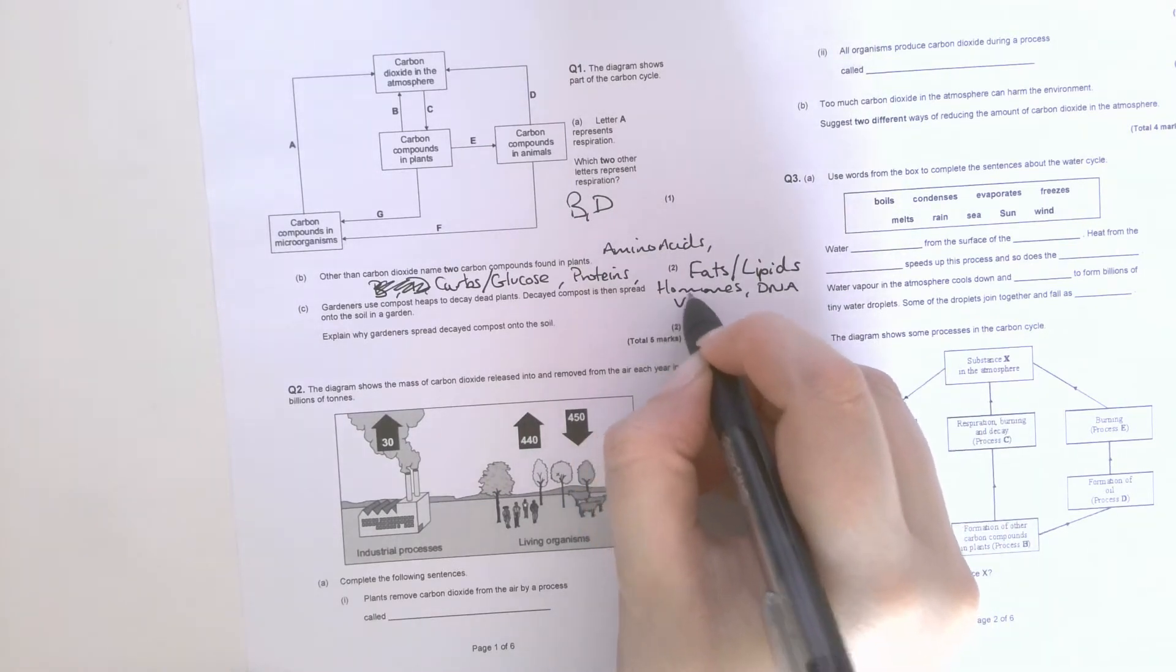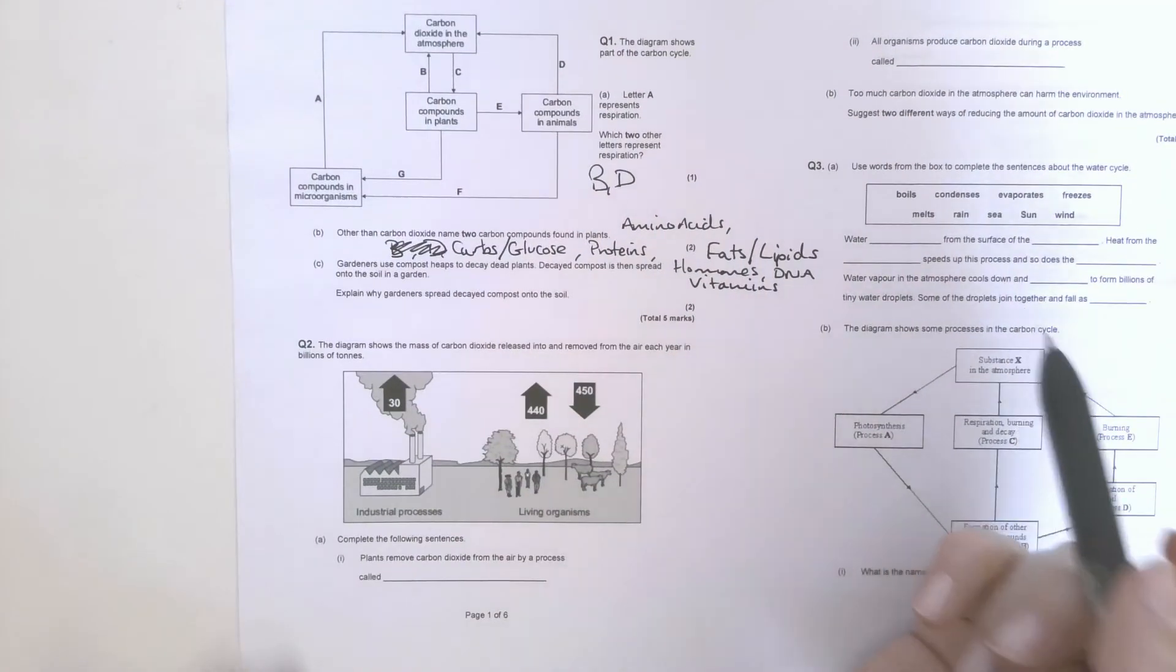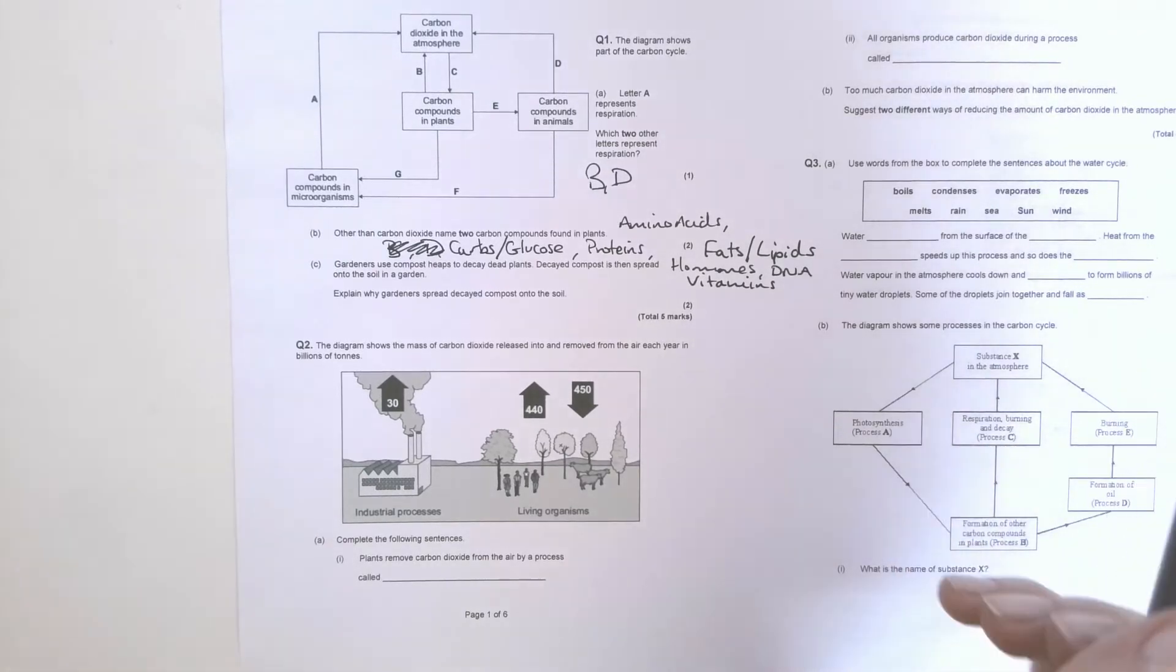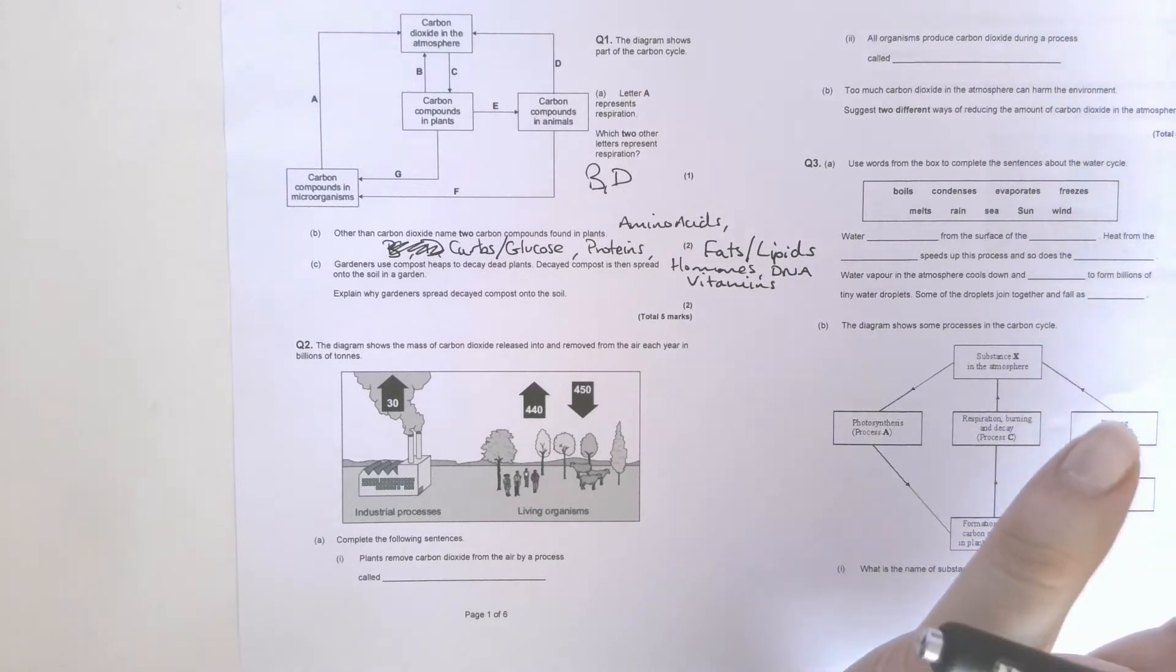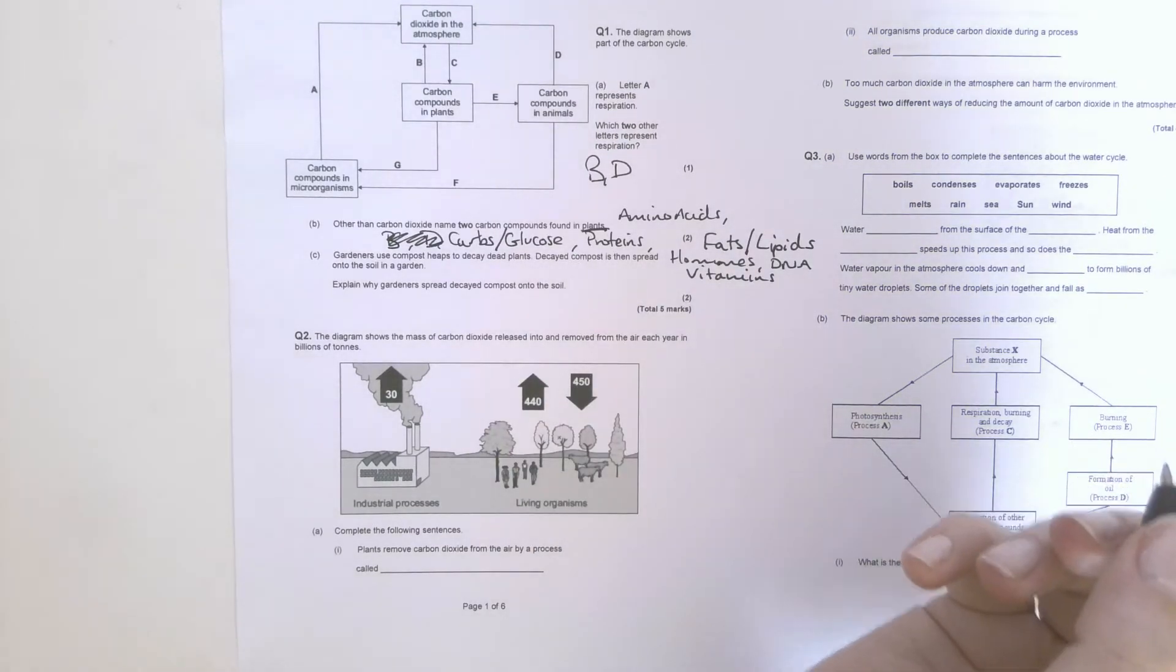You've got fats, lipids, well fats are lipids, put a slash in there, hormones, DNA, vitamins have some carbon in them. So basically any molecule that you build a living thing out of. Quite a few of you have put methane there, and good shout because from chemistry that's a carbon compound, but although some animals do release methane, this question was asking about plants. So a good try but I couldn't give you that.